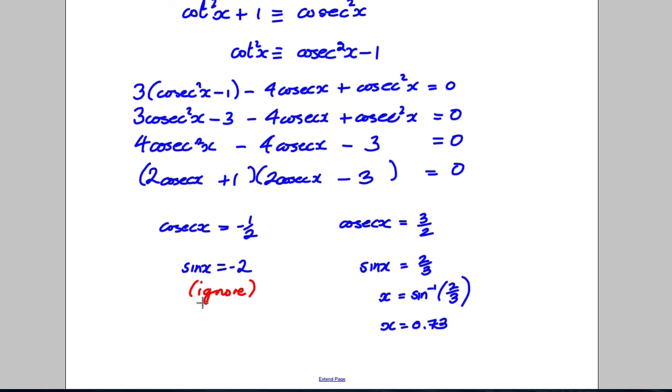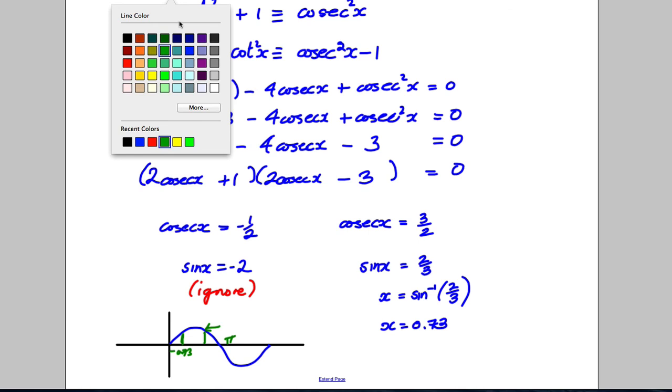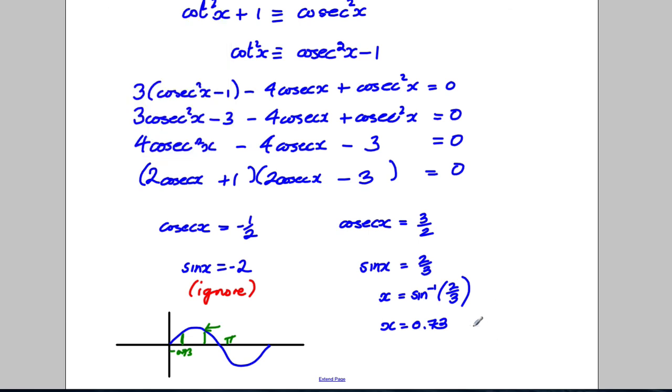That's one of the solutions. We're looking for all the solutions in between 0 and 2 pi. Remember the sine graph that we're dealing with here. The sine graph looks like this. If there is an answer here at 0.73 from 0, 0.73 away, there will be an answer 0.73 back from pi.